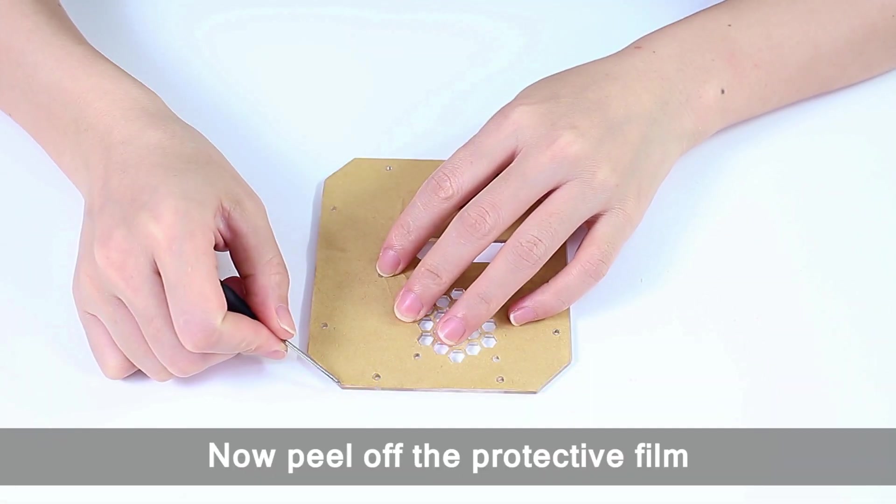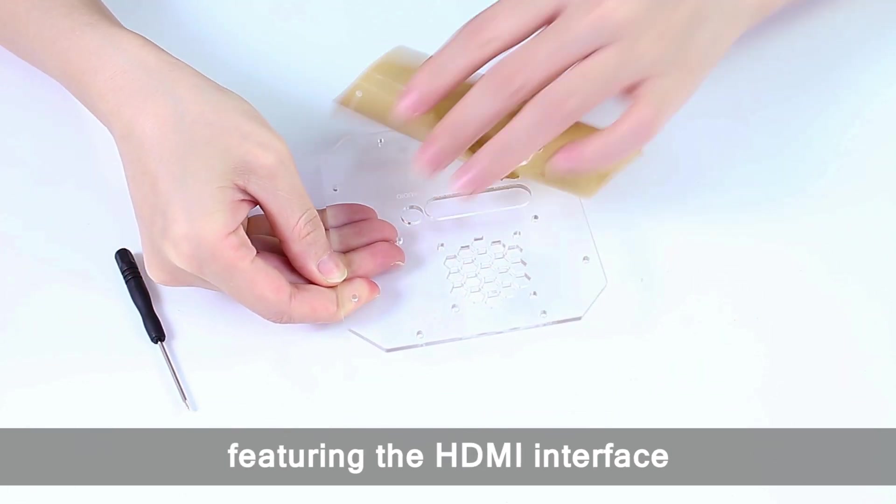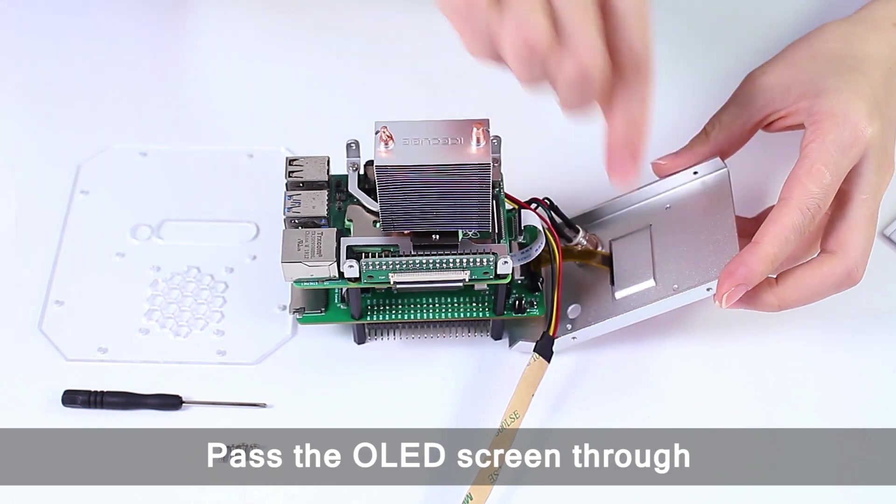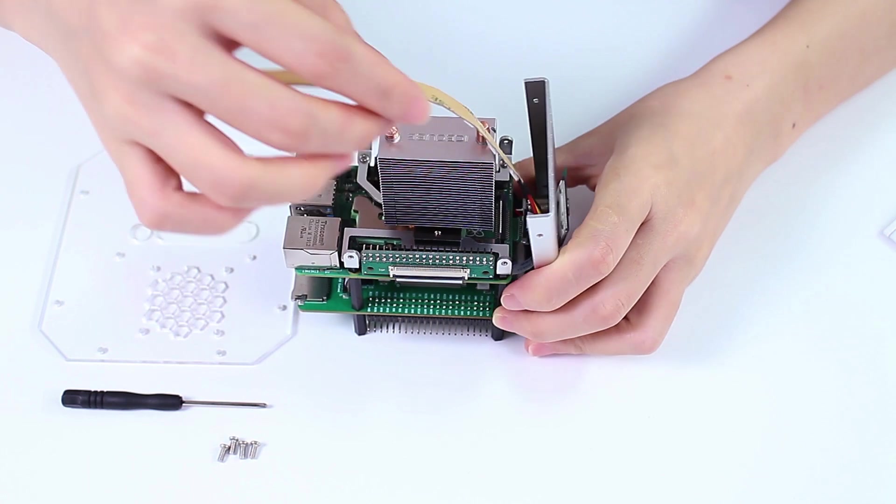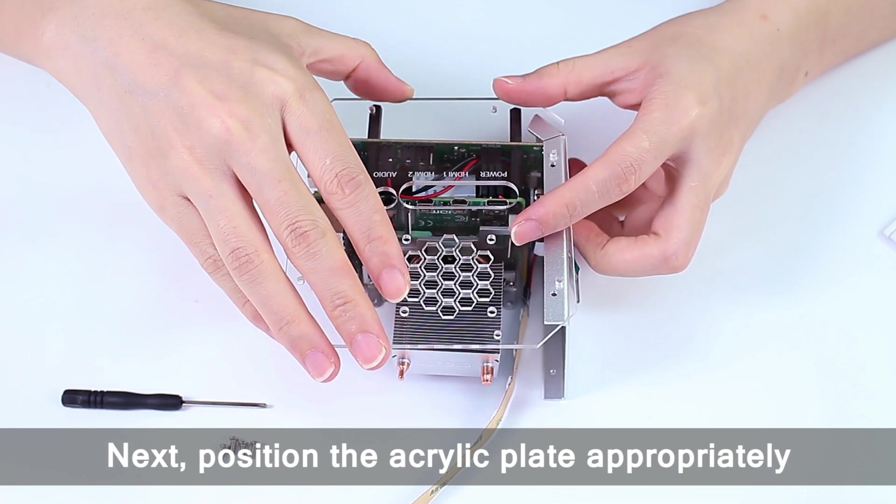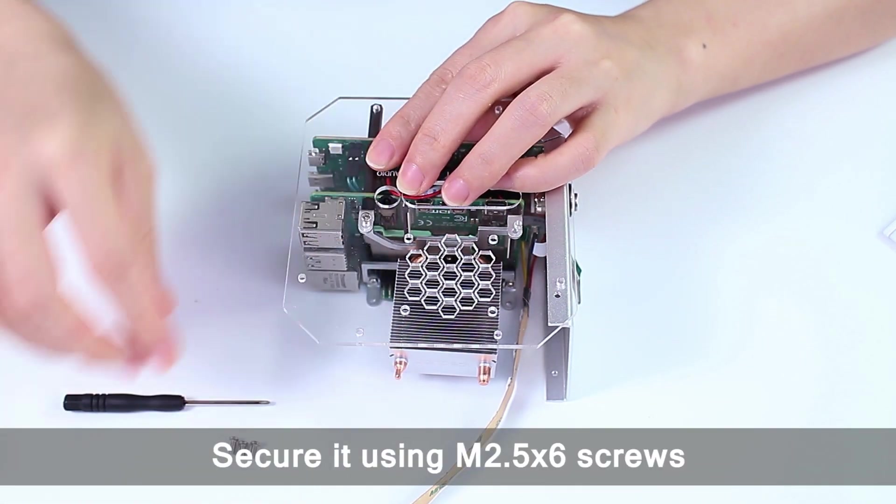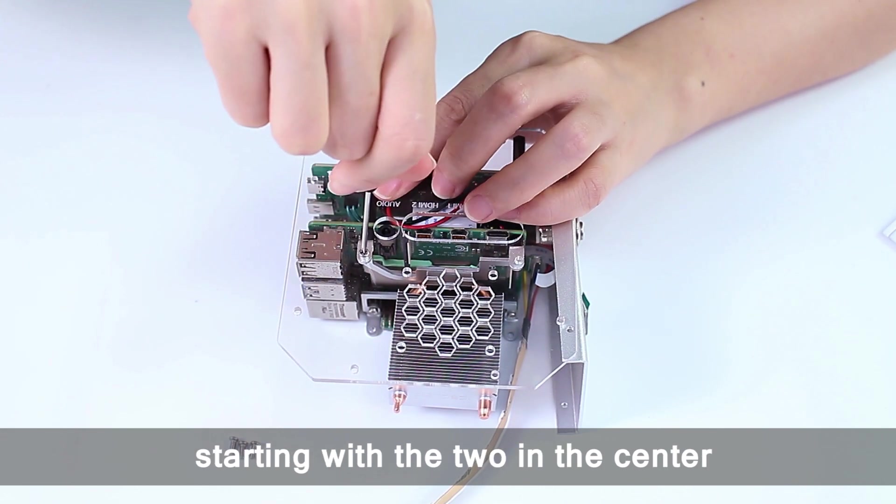Now peel off the protective film from the acrylic plate featuring the HDMI interface. Thread the OLED screen through the slot of the button plate. Next, position the acrylic plate appropriately. Secure it using M2.5 by 6 screws, starting with the two in the center.